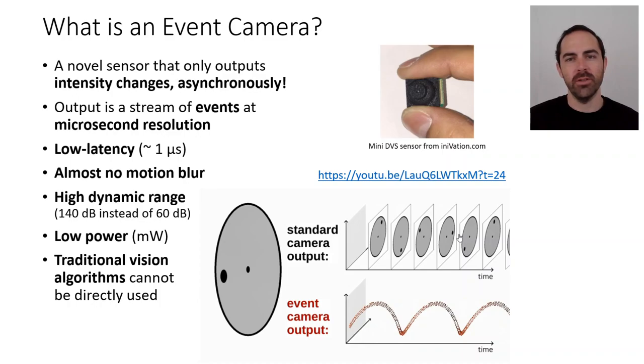Event cameras have very low latency in the order of microseconds and almost no motion blur because they are very high speed sensors. Additionally, they have a very high dynamic range in the order of 120 to 140 dBs, compared to about 60 dBs of standard frame-based cameras.